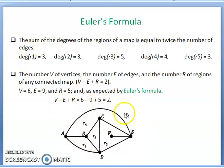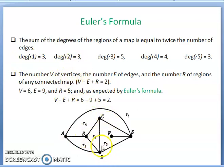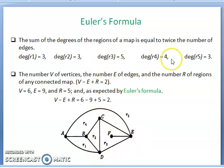For example, take this planar graph with regions R1 through R5. Degree of R1 is 3 (AB, BD, AD). Degree of R2 is 3 (BC, CD, BD). Degree of R3 is 5: D to C, C to E, E to F, F to E, E to D. Degree of R4 is 4: AB, BC, CE, AE. Degree of R5 (outside) is 3. The sum is 3+3+5+4+3 = 18.